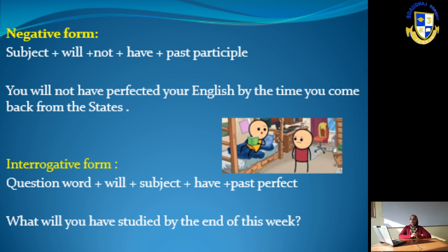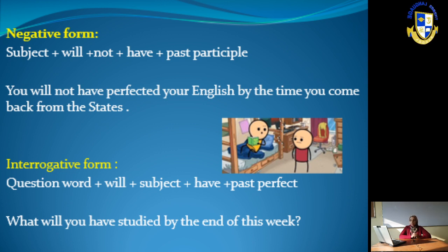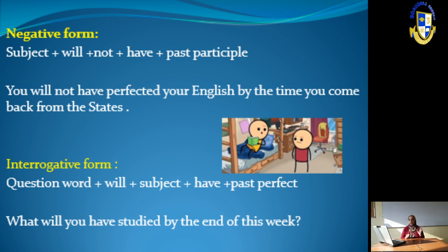The negative form is: subject + will not (won't) + have + past participle. For example: 'You will not have perfected your English by the time you come back from the States' — meaning you need to stay longer to make your English perfect.